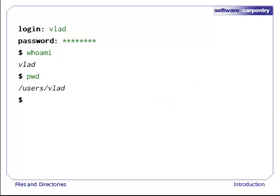At the very top of the file system is a directory called the root directory that holds everything else the computer is storing. When we want to refer to it, we just use a slash character. This is the leading slash in slash users slash vlad.